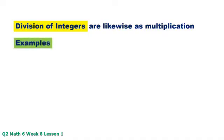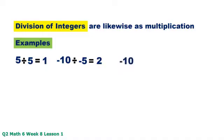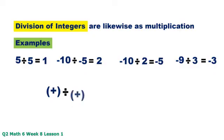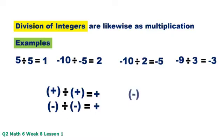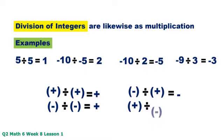Division of integers works likewise as multiplication. Examples: positive 5 divided by positive 5 equals positive 1; negative 10 divided by negative 5 equals positive 2; negative 10 divided by positive 2 equals negative 5; negative 9 divided by positive 3 equals negative 3. Summary: positive divided by positive equals positive; negative divided by negative equals positive; negative divided by positive equals negative; positive divided by negative equals negative.